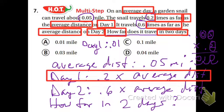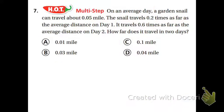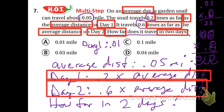So for day two, the snail traveled 0.6 times the average distance. So the average distance, once again, is 0.05. I multiply that by 0.6. Five times six is thirty. I circle all the digits after the decimal in my problem. And there's three of them. So I move my decimal one, two, three places to the left. And I put a zero there. So it's 0.03. So day two is 0.03.